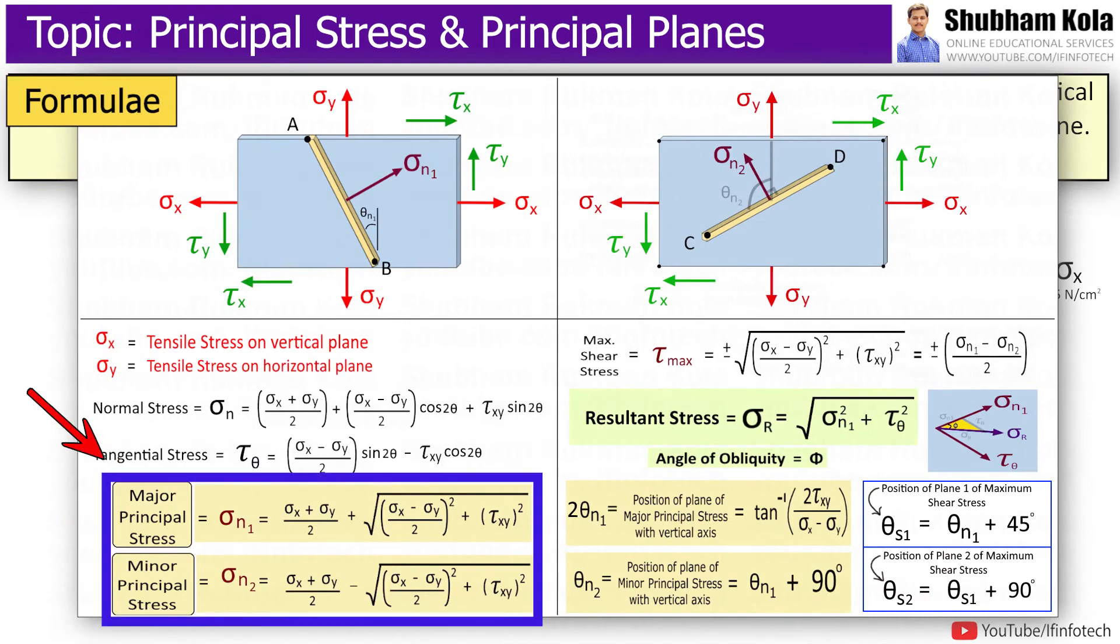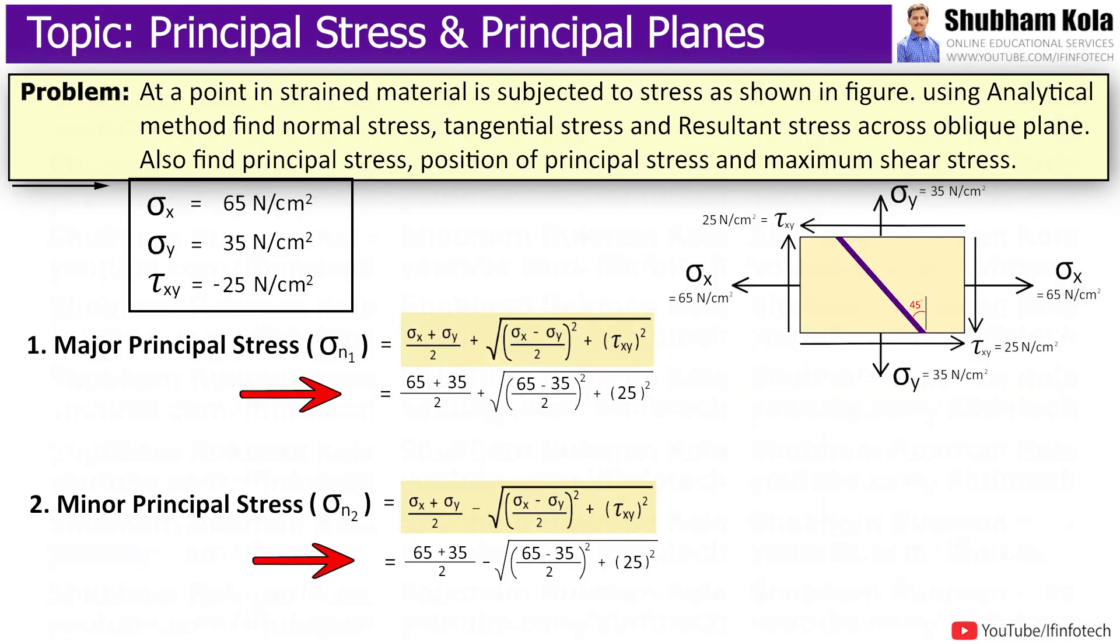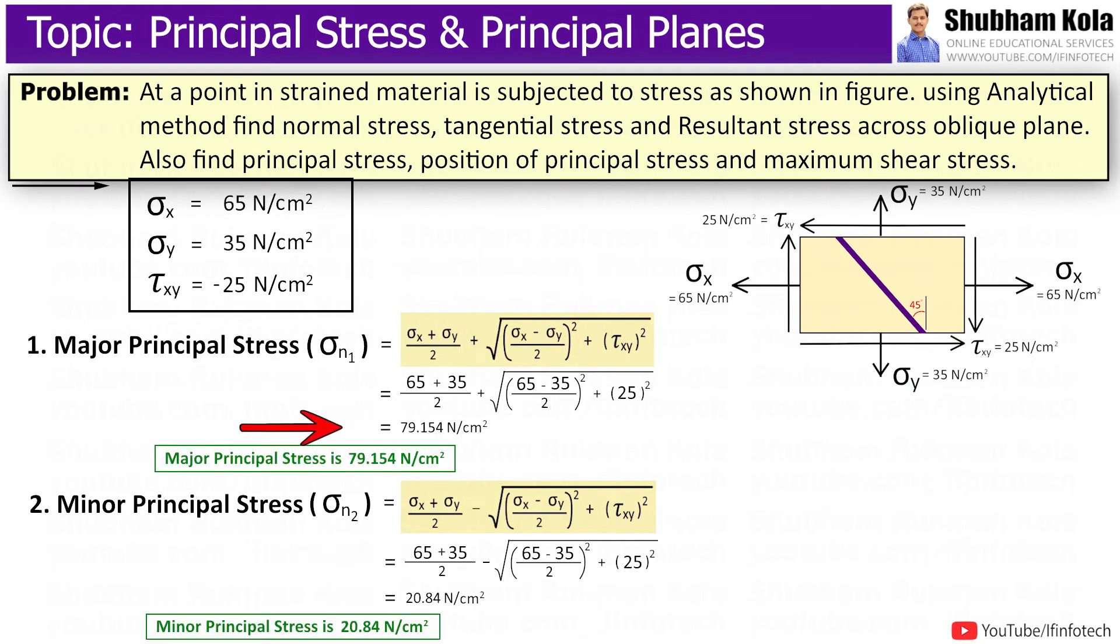To find out major principal stress and minor principal stress, I will put values of sigma x, sigma y, and tau xy. And I will calculate major principal stress as 79.15 newton per centimeter square. And minor principal stress we got as 20.84 newton per centimeter square.